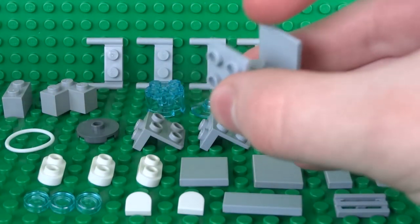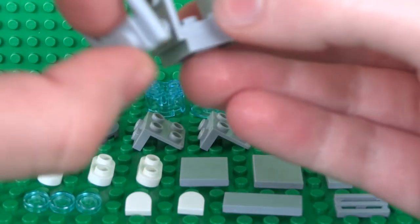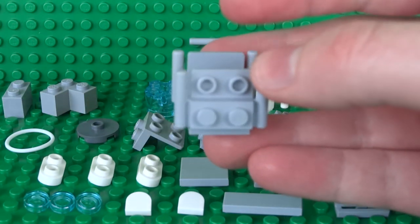They just go on either side, then on these brackets attach these modified 1x2 plates with the bar attachment.